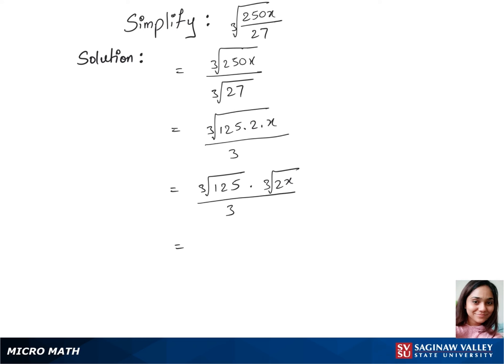125 is 5 cubed, so we can simplify cubic root of 125 to 5. That gives us 5 times cubic root of 2x over 3. This is our final answer.